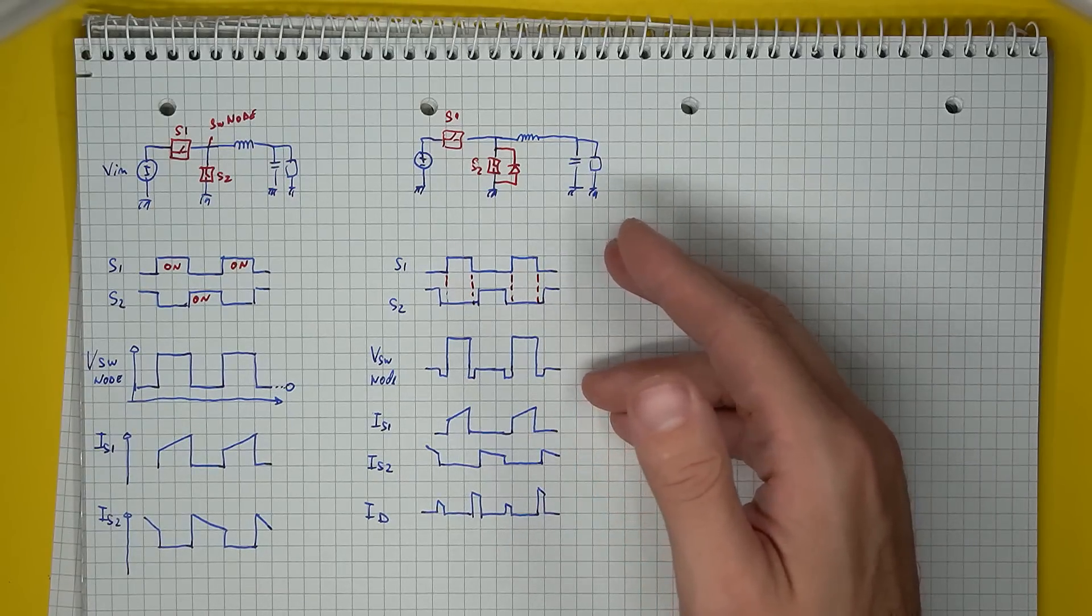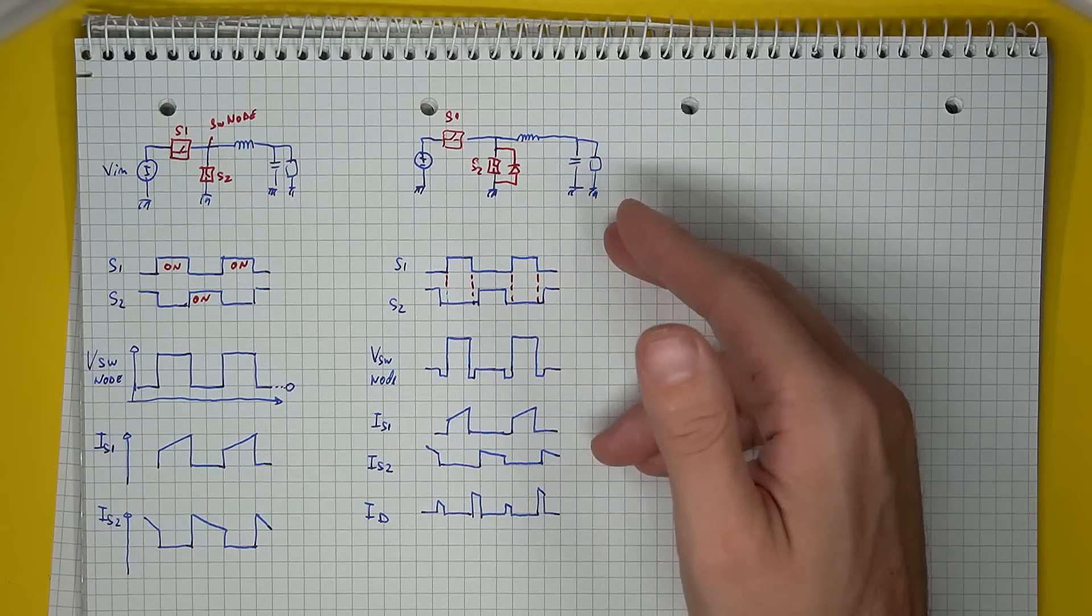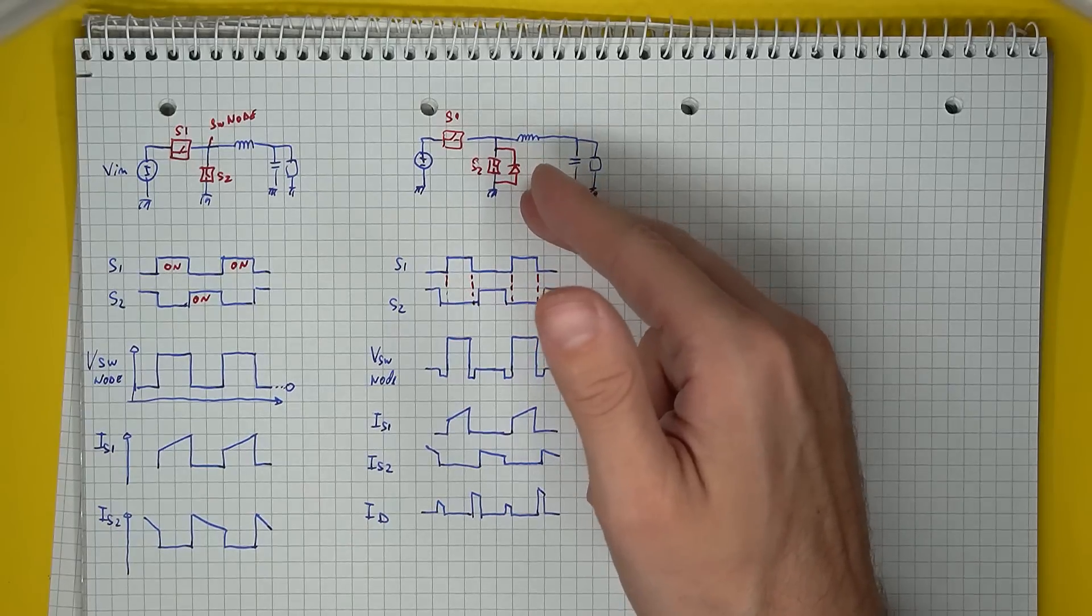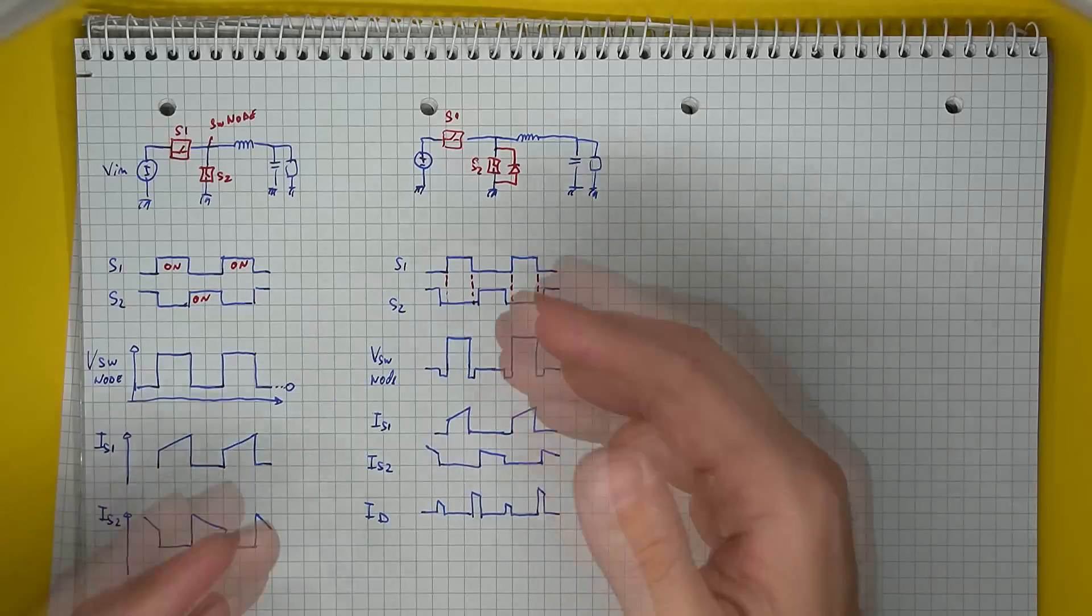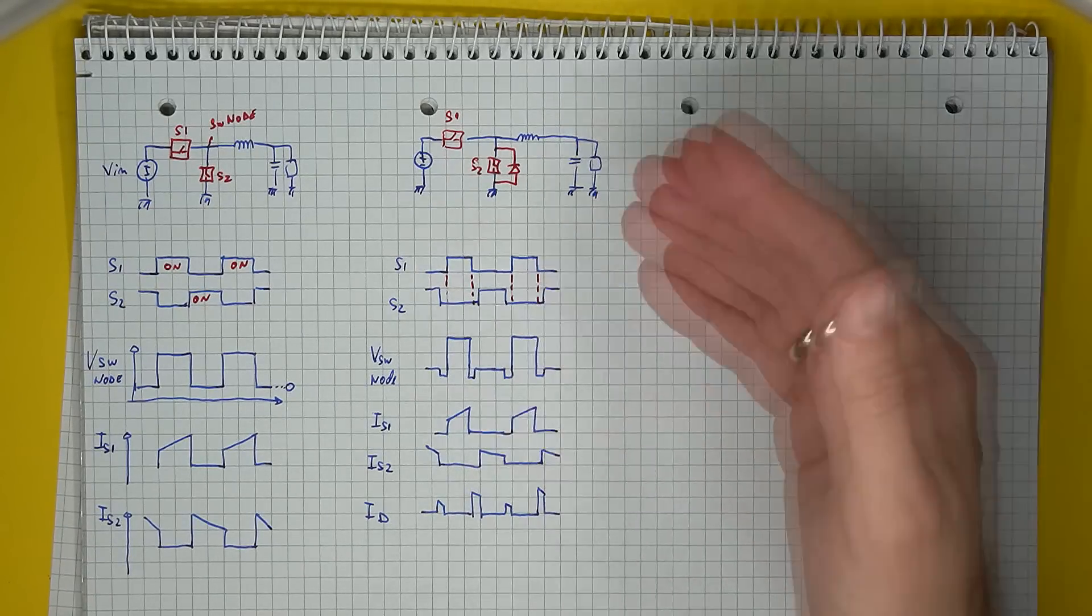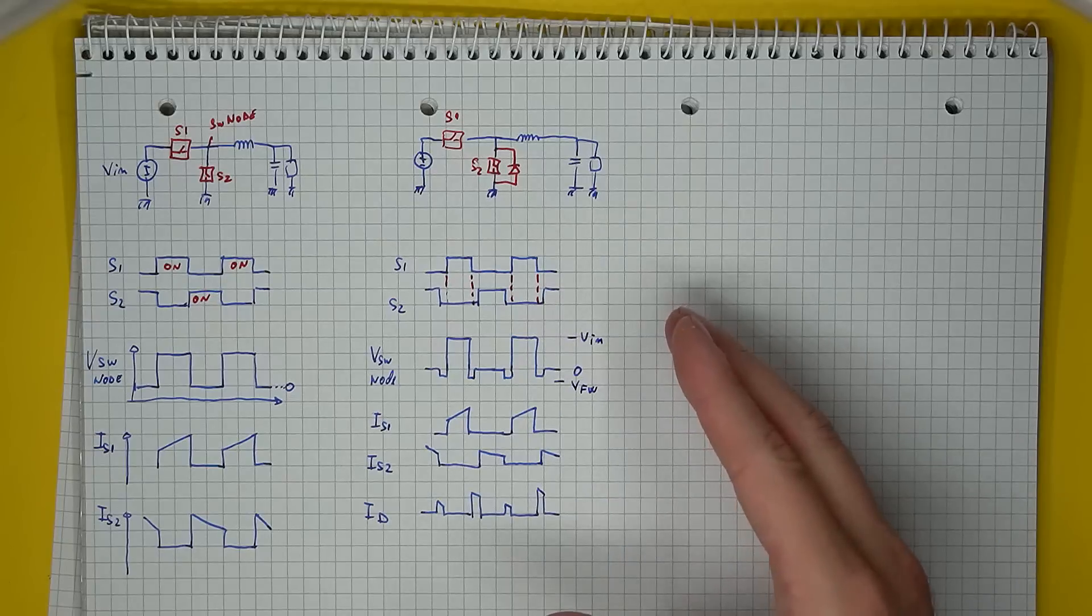And to keep the current continuously flowing through the inductor, there is always a diode in parallel with the low side switch. It's either built-in into the transistor or it's an added component.